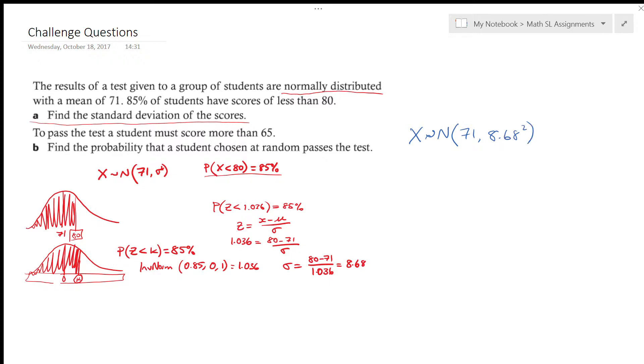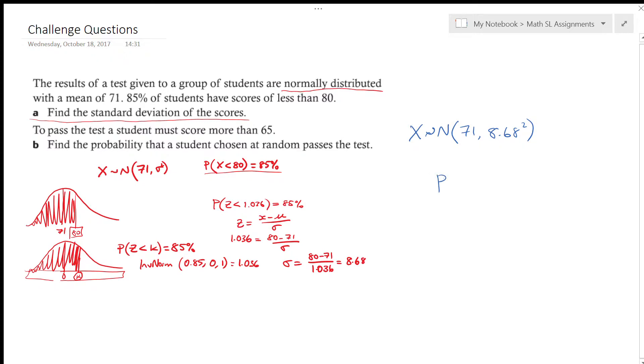So part B says to pass the test a student must score more than 65. Find the probability a student chosen at random passes the test.